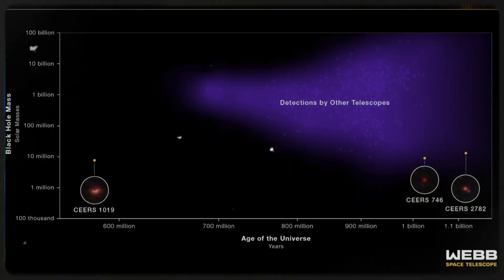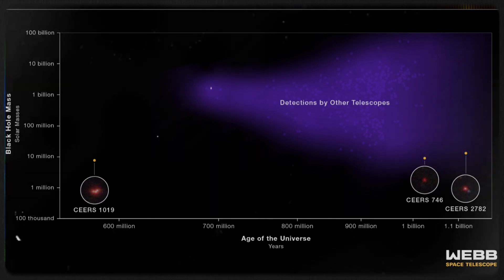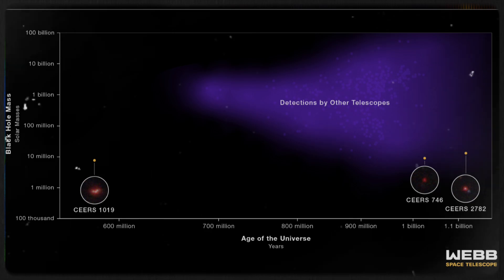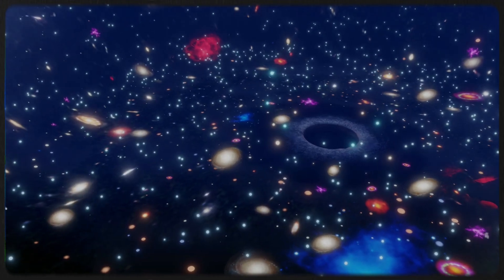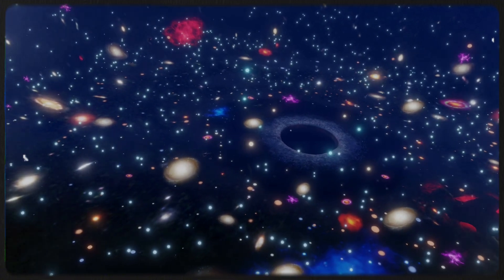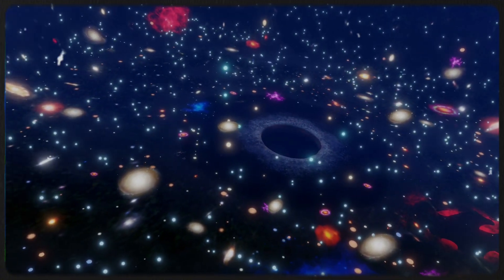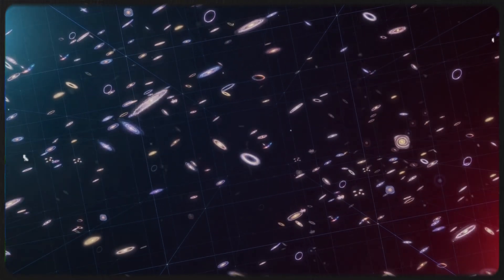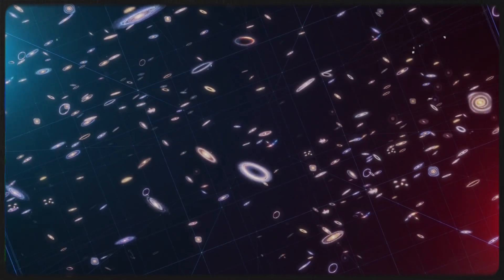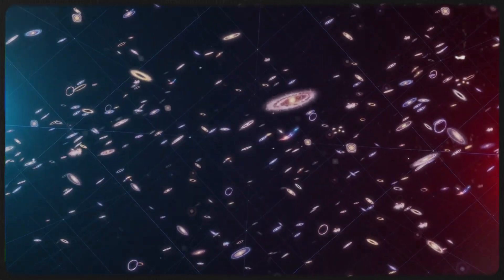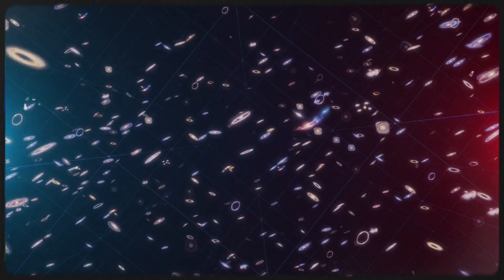The data gathered isn't just a treasure trove for studying black holes, it's also unveiling critical details about galaxy formation. The 11 galaxies in the CS survey offer a glimpse into a universe in flux, transitioning from its turbulent infancy to a more structured adolescence. By analyzing their properties, from their star-forming activity to their interactions with neighboring systems, scientists are gaining valuable insights into the forces that have shaped the cosmos as we know it.